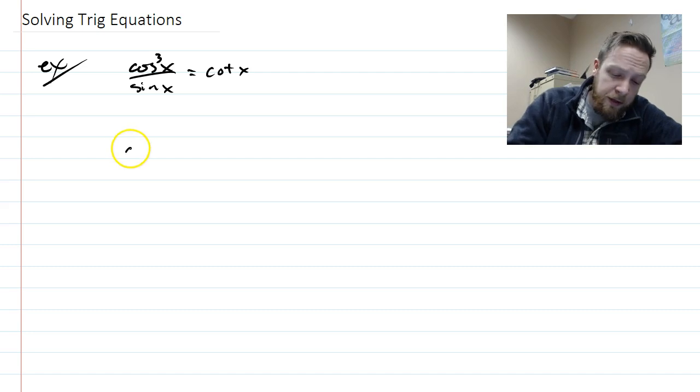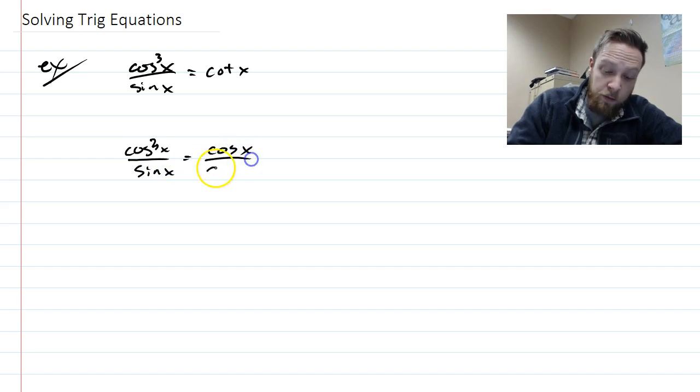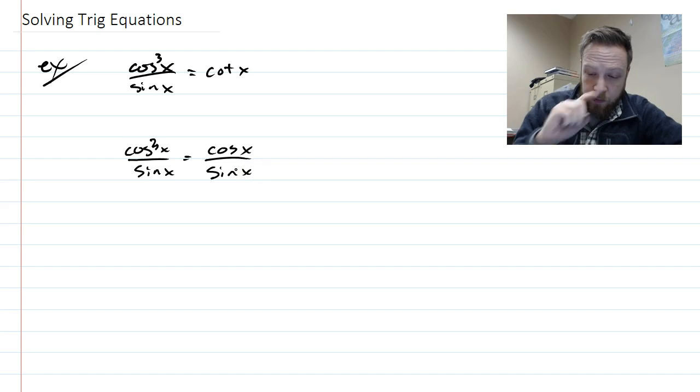So I'm going to rewrite this. I'm going to leave this, because it's already sine and cosine, and this will be cosine x over sine x. And so, after this, I would multiply by sine x on both sides.